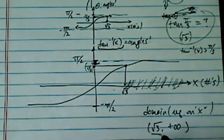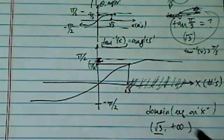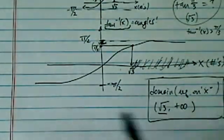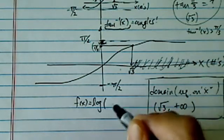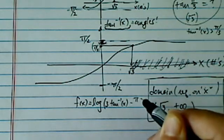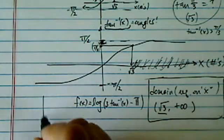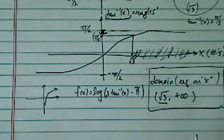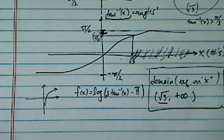It cannot equal radical three because the logarithm is not defined at zero. So here's our domain. Now, having found the domain, let's put our function back in to find the range. We have log of three times arctangent of x minus pi. Since logarithm is a monotone increasing function, we need to find what the lowest and highest values of the argument are.